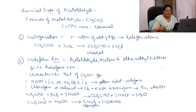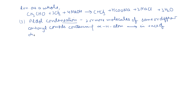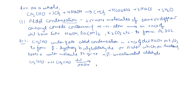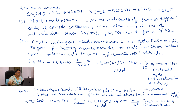First of all, acetaldehyde reacts with Cl2 and NaOH; then 3 H atoms of the alkyl group are replaced by halogen and we get chloral. This chloral on hydrolysis with NaOH gives chloroform. The reaction as a whole is: acetaldehyde plus chlorine plus NaOH gives chloroform, sodium formate, sodium chloride, and water.